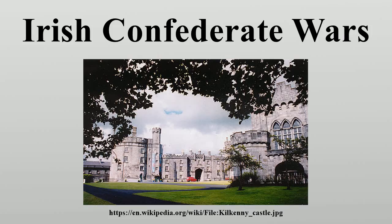The wars produced an extremely fractured array of forces in Ireland. The Protestant forces were split into three main factions as a result of the civil wars in England and Scotland. The Catholic Confederates themselves split on more than one occasion over the issue of whether their first loyalty was to the Catholic religion or to King Charles I. The wars ended in the defeat of the Confederates, who along with their English Royalist allies were defeated during the Cromwellian conquest of Ireland by the New Model Army under Oliver Cromwell in 1649–53.